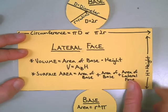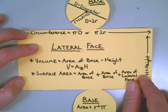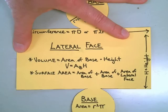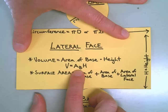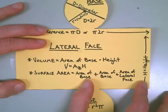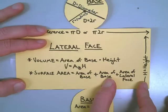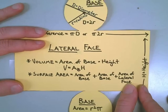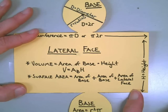On the lateral face we also have the height. We need the height and the circumference to get the area of the rectangle. We also need the height to get the volume. Volume is found by taking the area of one of the bases — since they are congruent — and multiplying by the height. For surface area, we calculate the area of the base, add it a second time since both bases are congruent, then add the lateral face area. Those three things together give the total surface area.